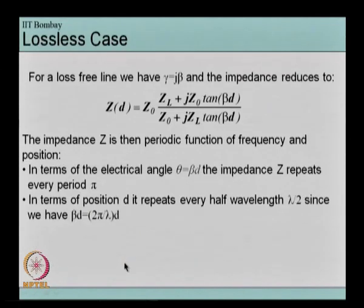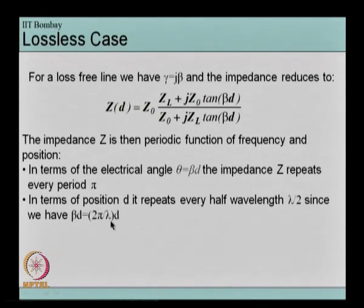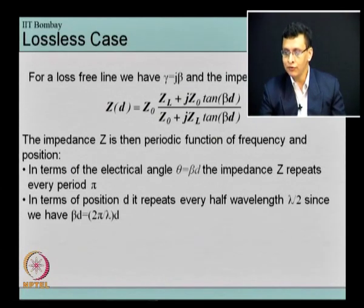After doing the coordinate transformation from x to d we get this equation and we see that the value of impedance for a transmission line does not keep increasing or decreasing monotonically with increasing d. It actually repeats because the tan function itself repeats. In terms of electrical angle, after every period of pi, Z(d) will repeat itself, or in terms of position after every lambda/2 length. So it is periodic both in electrical angle, wavelength, and frequency.